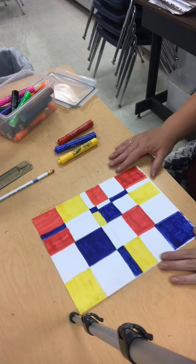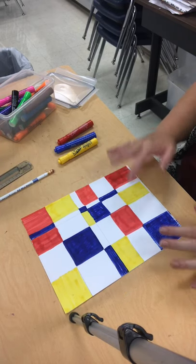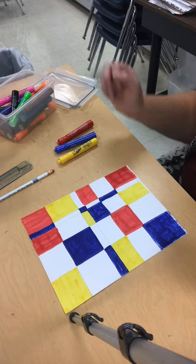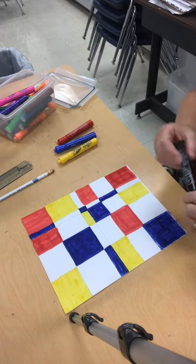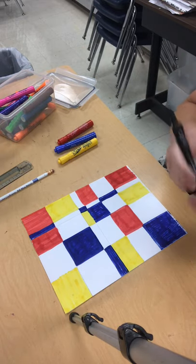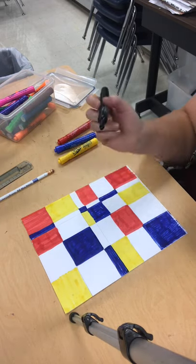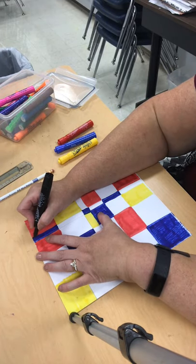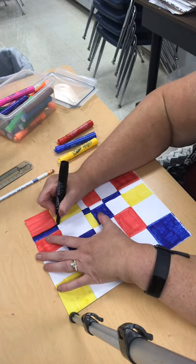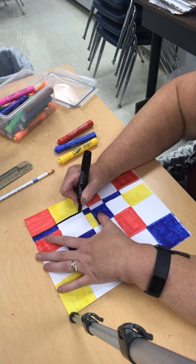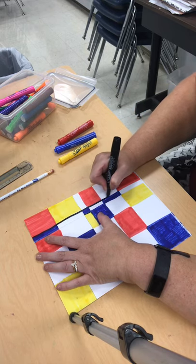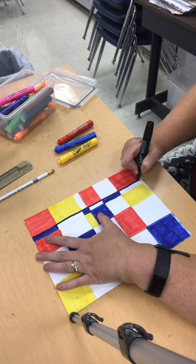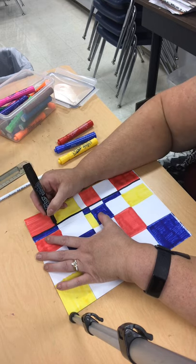Okay, once you get it colored in the way that you like and you've got some white spaces left, then you're gonna take a black and your black is gonna be the car in the city and we're gonna drive down these New York streets very carefully and trace over your pencil lines.